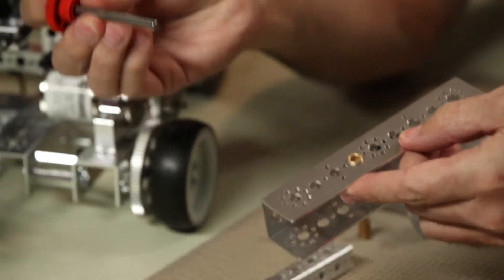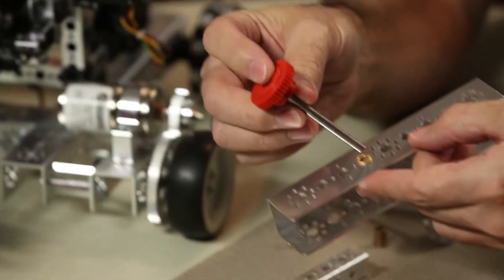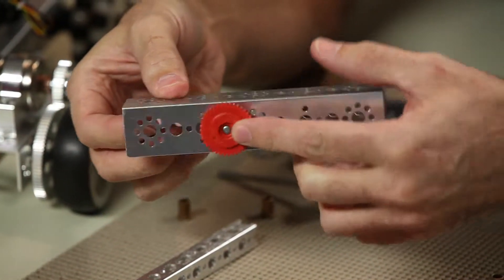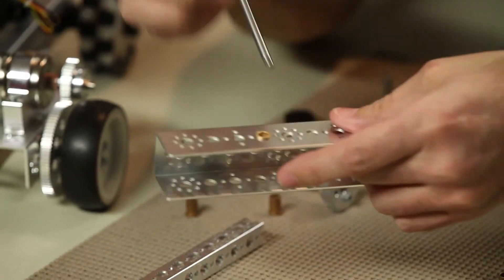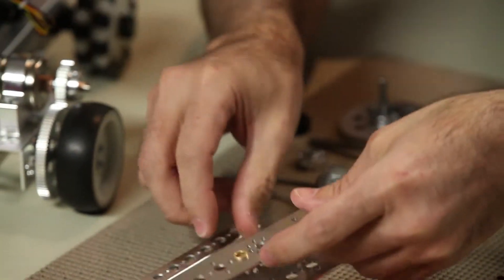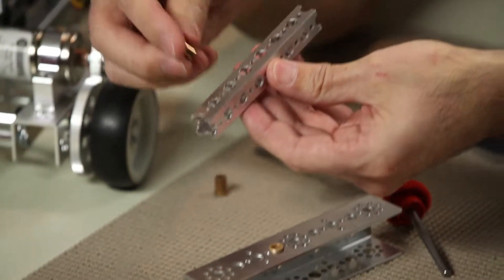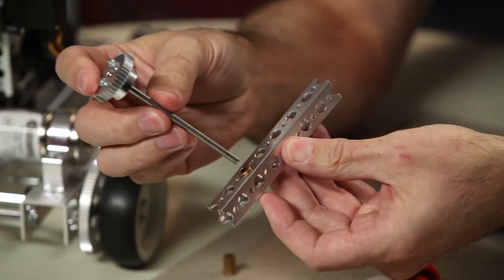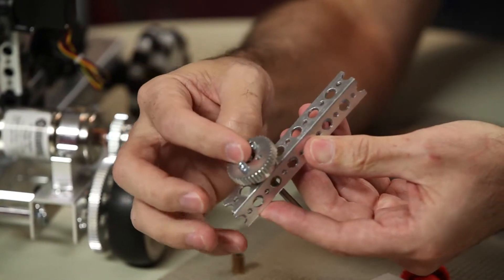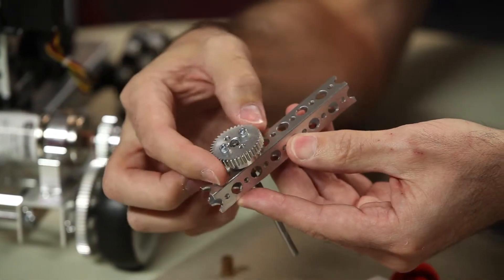And the idea is that if we use the larger Prime axles, we use the Prime bushings, and you'll see they go right into the Max channel. And if we're going to use the Max on either the Prime or the Max channel, then we use the Max bushings, and the smaller Max axles will go right in as well.